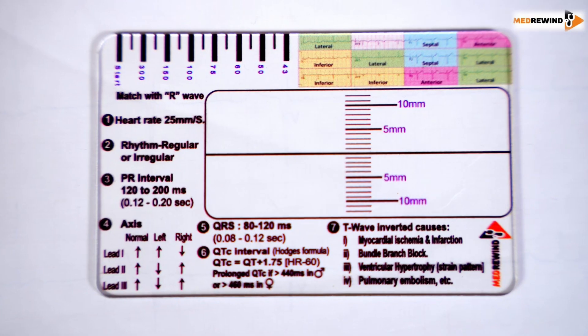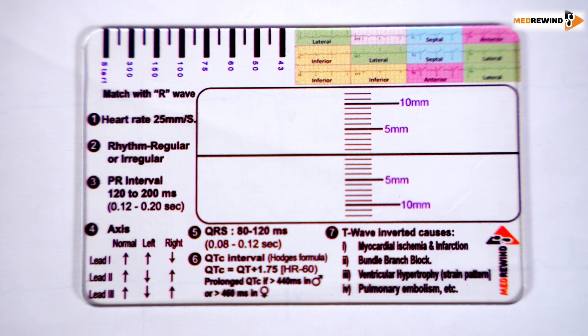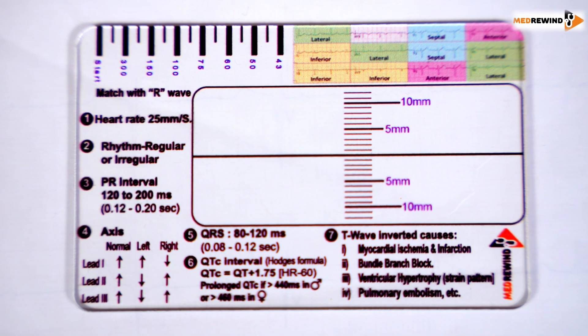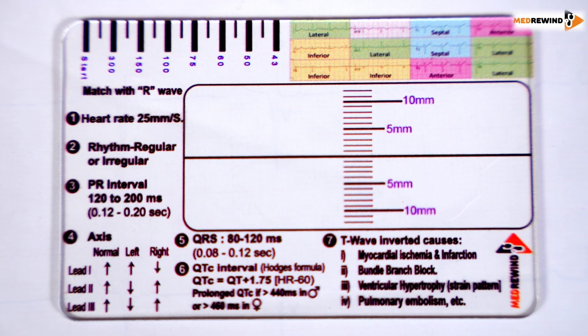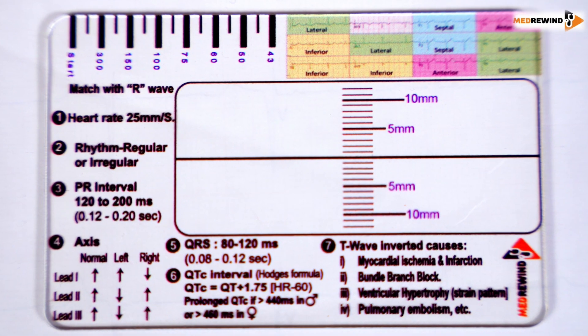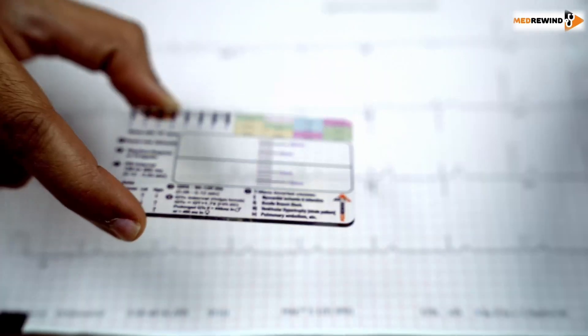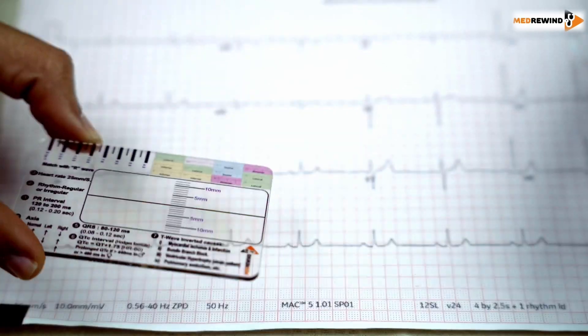Today we are going to discuss a new product which is very much useful for medical students. This is called the ECG Ruler. It is very useful for medical students who are practicing day to day and seeing ECGs on a regular basis. It is very helpful to make an accurate diagnosis regarding ECGs, at least to get a basic idea of what is going on in an ECG. Let's discuss the ECG Ruler on an ECG.